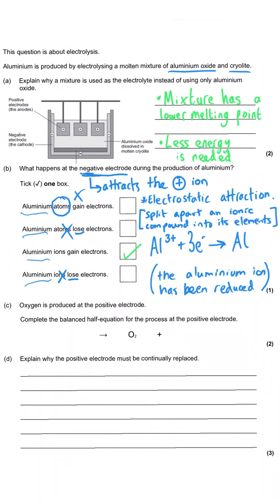Part C says oxygen is produced at the positive electrode and we need to complete the balanced equation for that formation. Oxygen is in group six, so once it forms an ion it needs to have gained two electrons, becoming the oxide ion with a charge of 2−. In electrolysis the ion always goes on the left-hand side and our element is on the right-hand side.